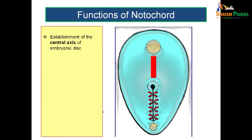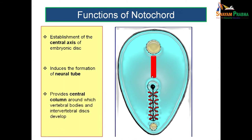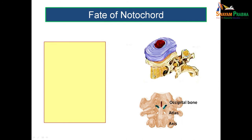What are the functions of notochord? The notochord helps to establish a central axis for the embryonic disc. Once formed, it induces the formation of the neural tube. In embryology, one structure after its formation induces the next — primitive streak induced notochord, notochord induces neural tube, and so on. It also provides a central column around which the vertebral bodies and intervertebral discs develop.